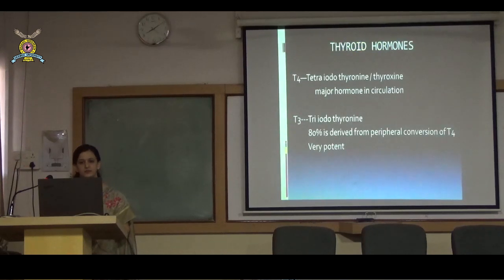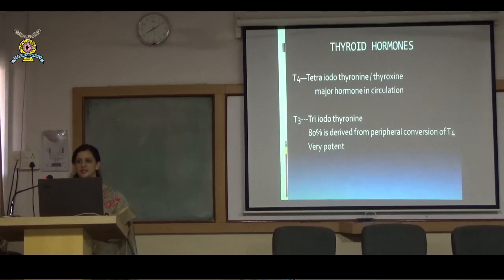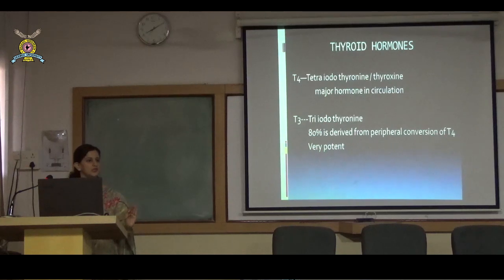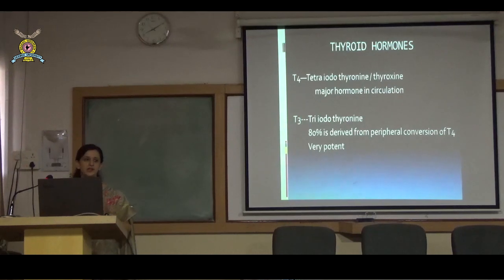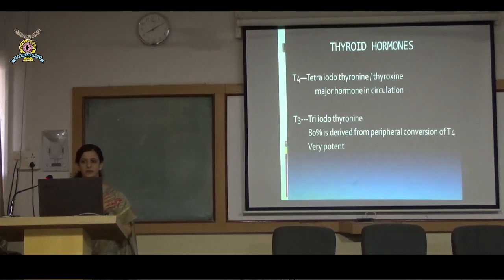There are two thyroid hormones: T4 (thyroxine or tetraiodothyronine), which is the major hormone in circulation, and T3 (triiodothyronine). Most T4 is directly secreted by the thyroid gland, while most T3 comes from peripheral conversion of T4 to T3. T3 is much more potent than T4, but what we screen and treat with is mainly T4 — thyroxine.